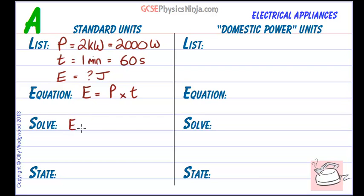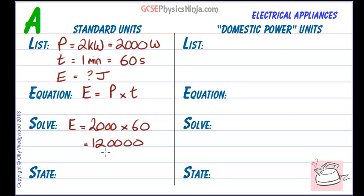Energy equals power times time: 2000 times 60, which equals 120,000 joules. State the answer with the unit: energy transformed equals 120,000 joules. That completes the standard units calculation.